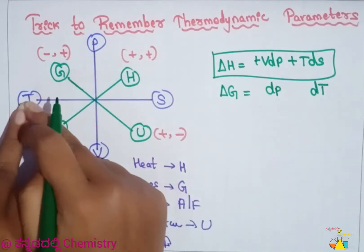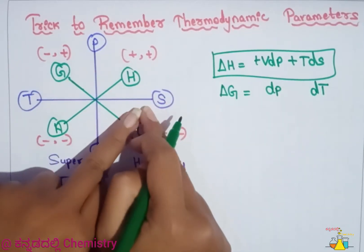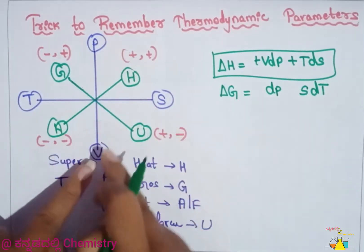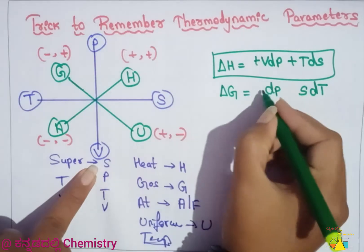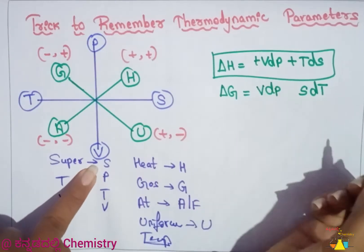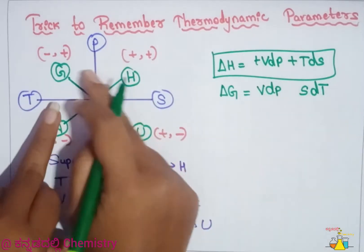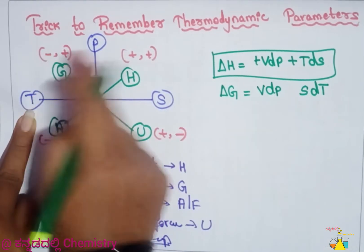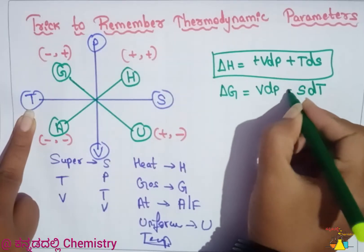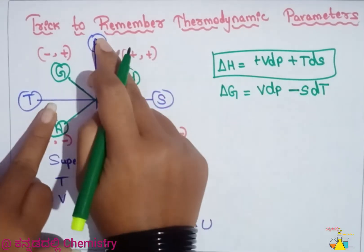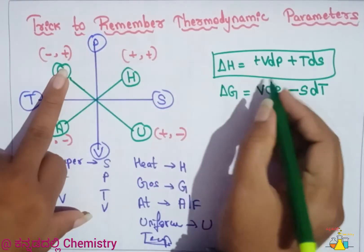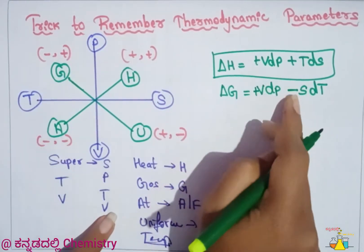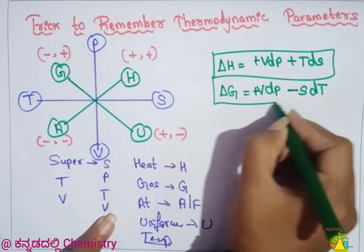T is opposite S, so that means S. P is opposite V, so that means V. Temperature is considered negative — so P is positive. That means the expression becomes VdP minus SdT.